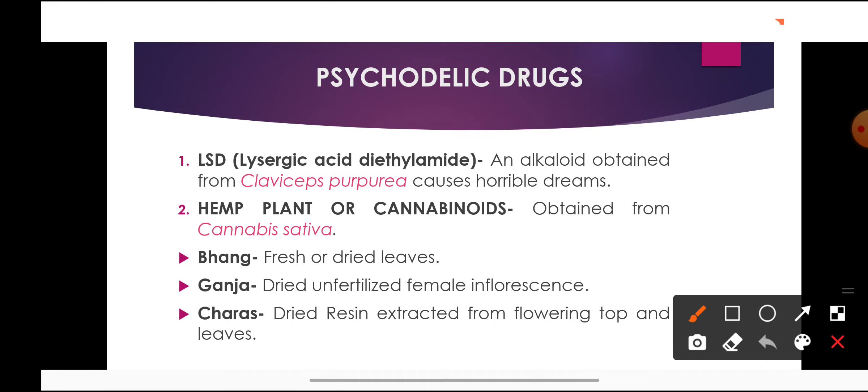Psychedelic drugs are vision-producing drugs that produce illusions. When these drugs are taken, visions appear, sounds are heard, and a floating feeling occurs — as if the individual is flying in the air and the body feels light, with sounds coming from all directions. Examples of psychedelic drugs include LSD (lysergic acid diethylamide), which is obtained from the fungus Claviceps purpurea, and cannabinoids, which are alkaloids obtained from the hemp plant, Cannabis sativa.